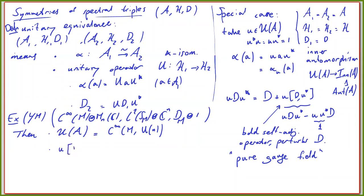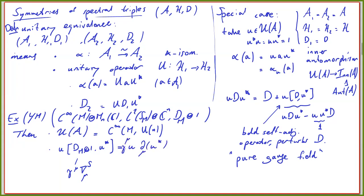Computing this perturbation for such a unitary: this commutator only sees the first-order parts — the partial derivatives. So this becomes U ∂_μ U* times γ^μ, which is precisely a pure gauge field as you would see it in physics. If you write U = e^{iX} locally, you could even write this as something like γ^μ ∂_μ X — a full derivative — giving the pure gauge field situation when applying this unitary transformation to the Dirac operator D_M.